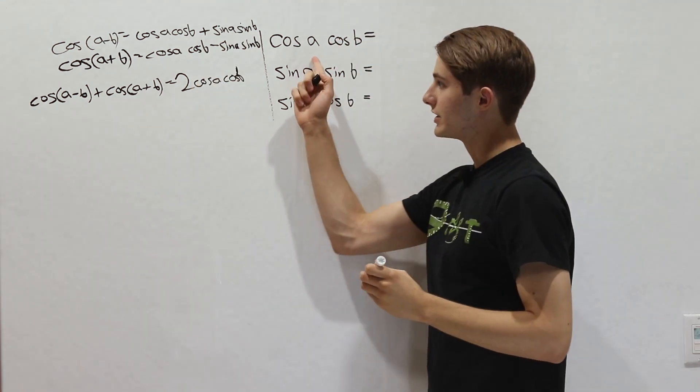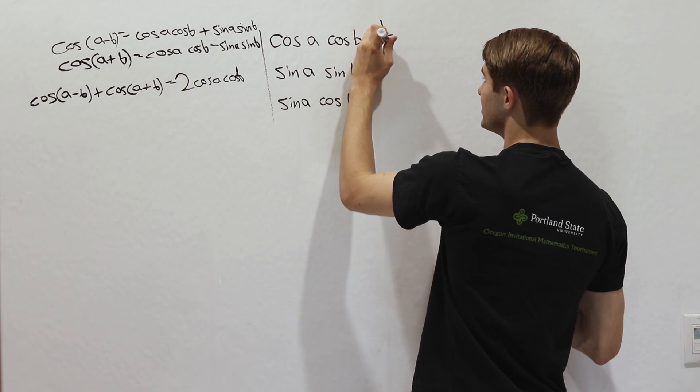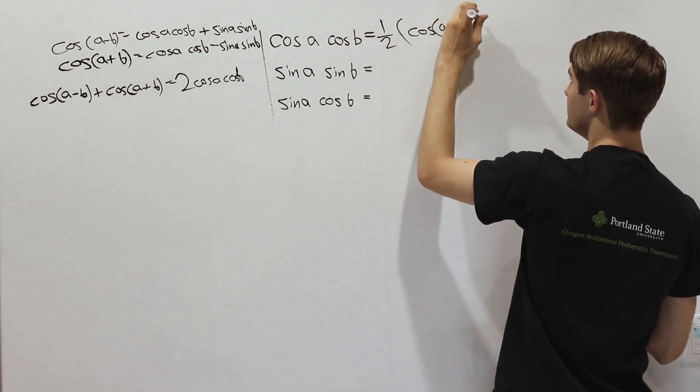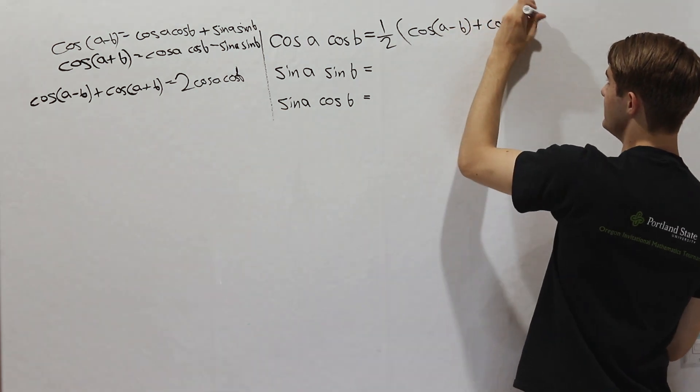And now if we want to isolate cosine a cosine b, well we just take one half of what we have right there. So one half cosine a minus b plus cosine a plus b.